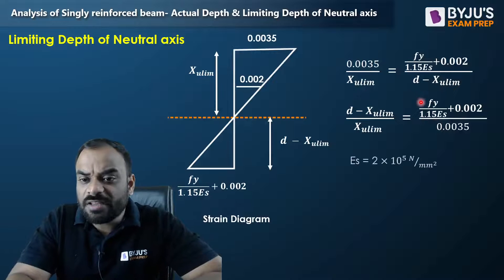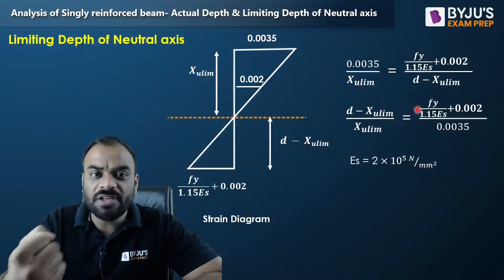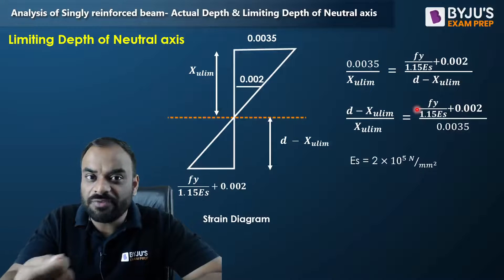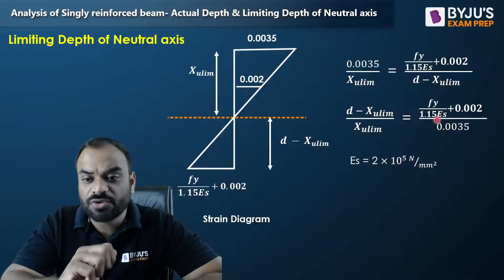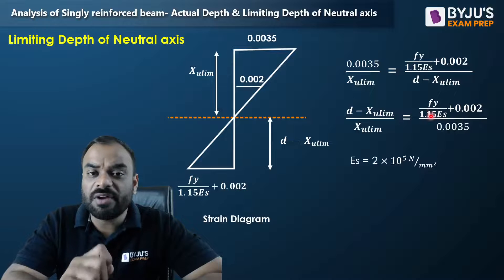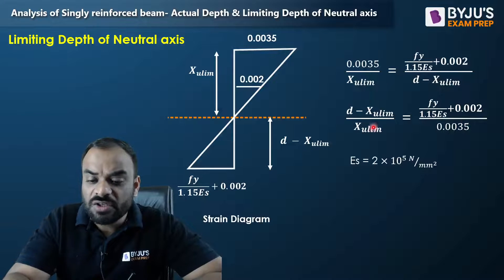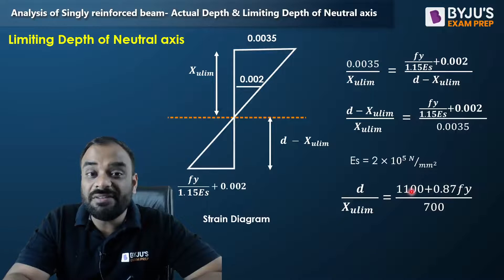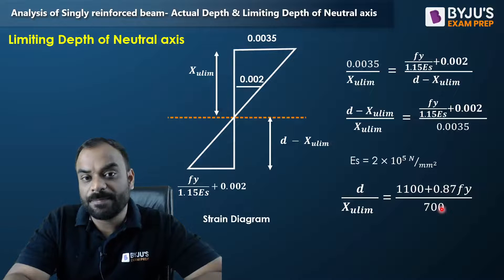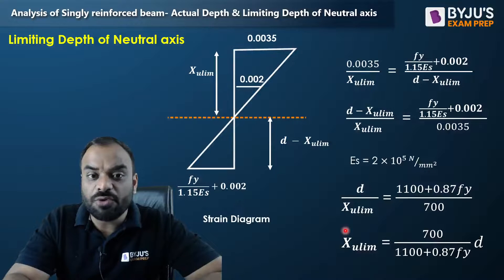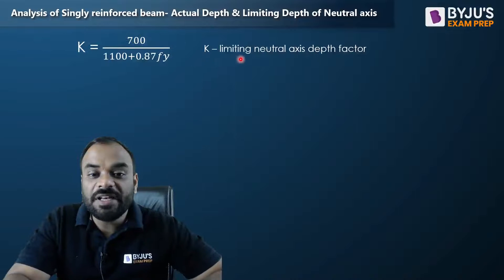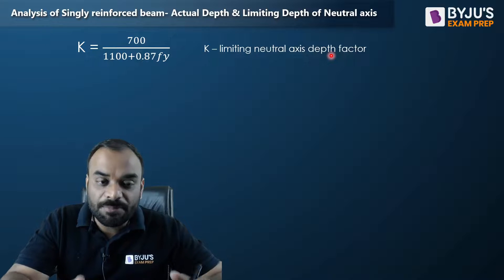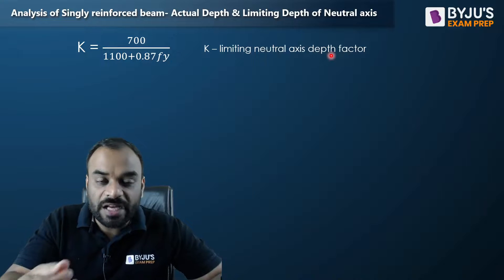The FY value depends on the grade of steel — FE 250, FE 415, or FE 500 — but ES remains constant at 2×10⁵ N/mm². Since FY divided by 1.15 equals 0.87FY, resolving the similar triangle expression gives: D divided by XU limiting equals (1100 plus 0.87FY) divided by 700. Therefore, XU limiting equals 700 divided by (1100 plus 0.87FY) multiplied by d (effective depth). This factor is known as the limiting neutral axis depth factor.